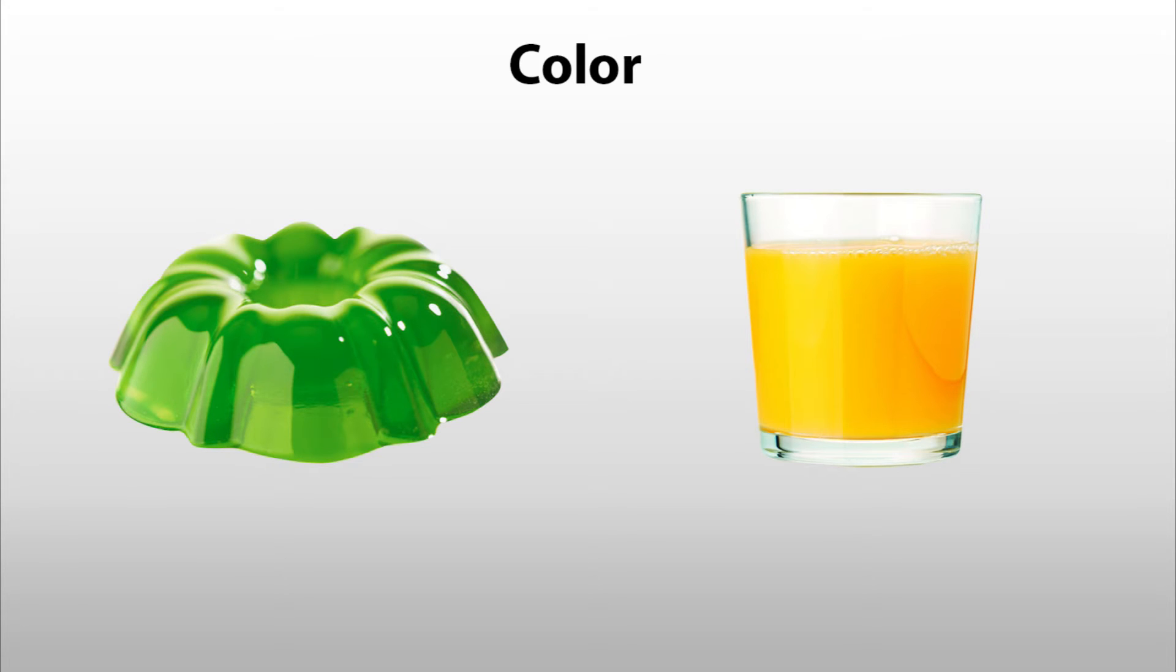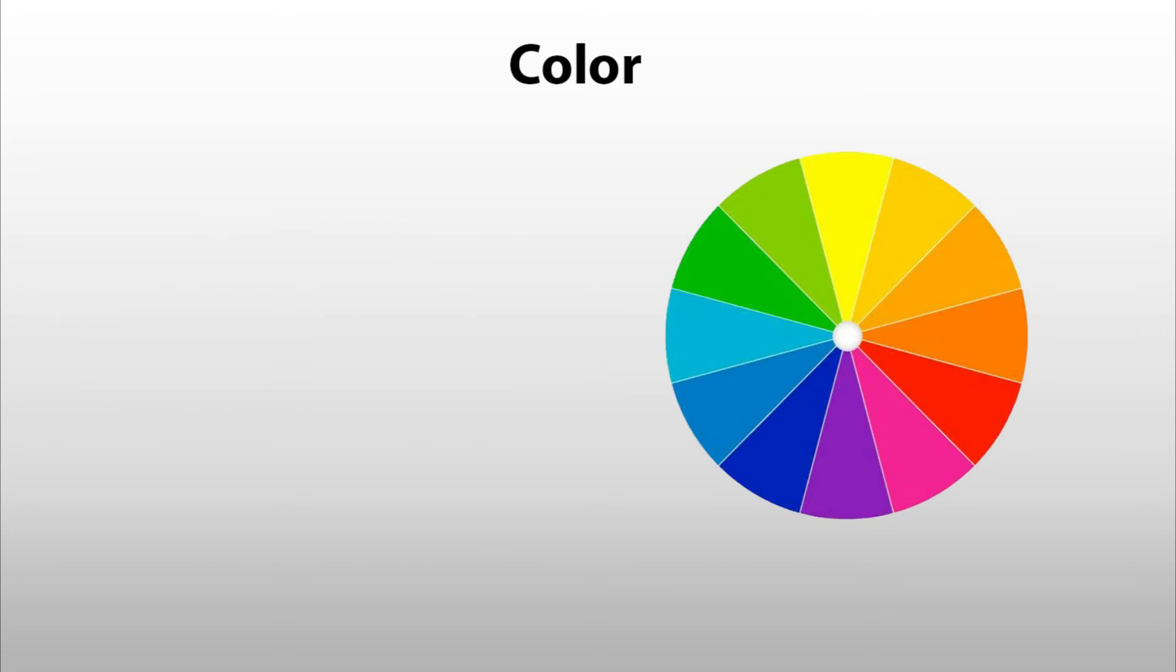To better understand this phenomenon, let's look at a basic color wheel. If a substance absorbs a specific color, then the complementary color, the one directly across on the wheel, is the observed color of that substance.